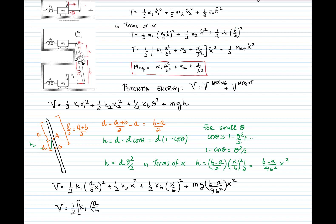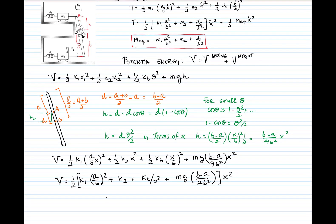The equivalent spring constant is K1 times (A over B) squared, plus K2, plus K_torsional divided by B squared, plus MG times (B minus A) divided by (2B squared). Everything inside the bracket multiplied by X squared, and the whole expression multiplied by one-half, gives us the potential energy in the standard form one-half K_eq times X squared.